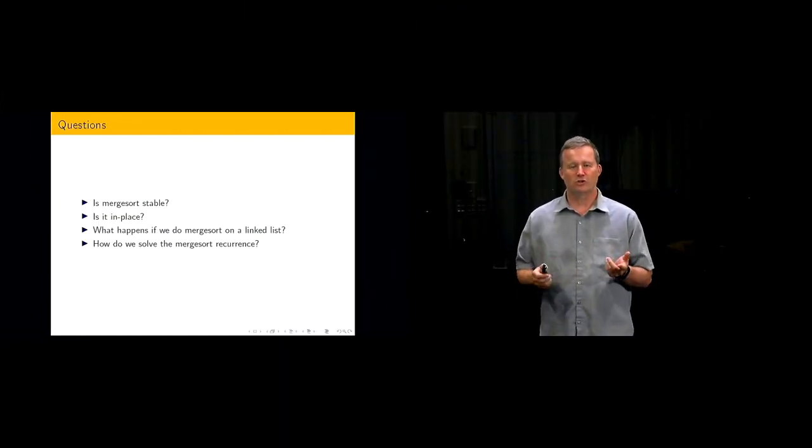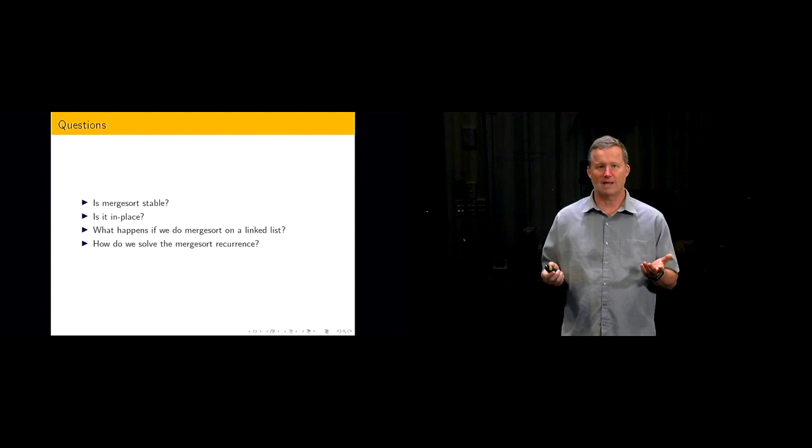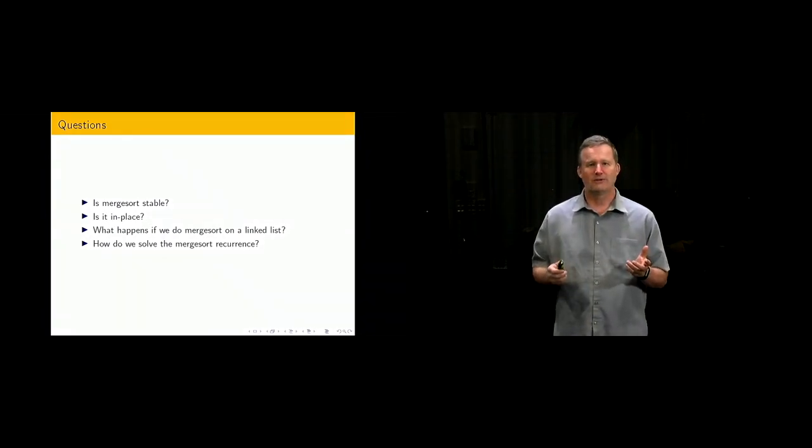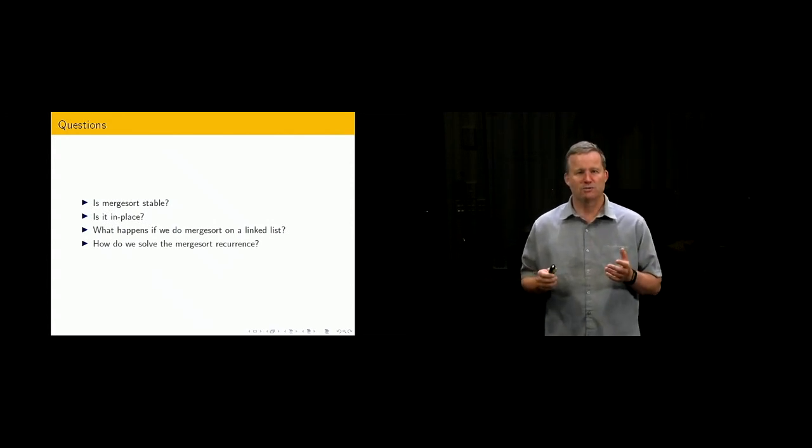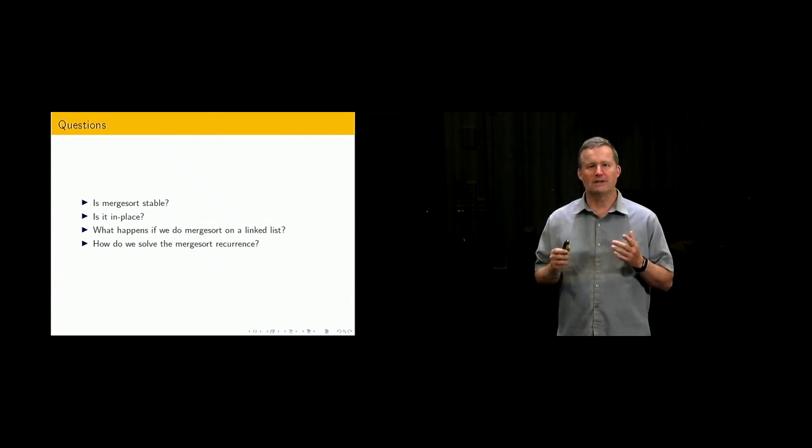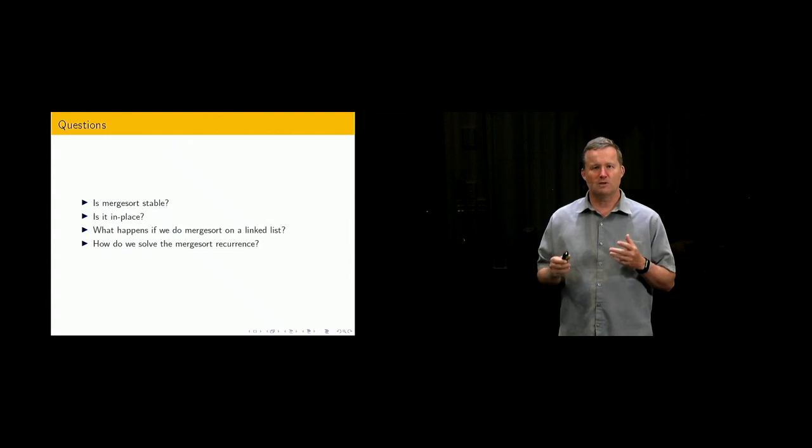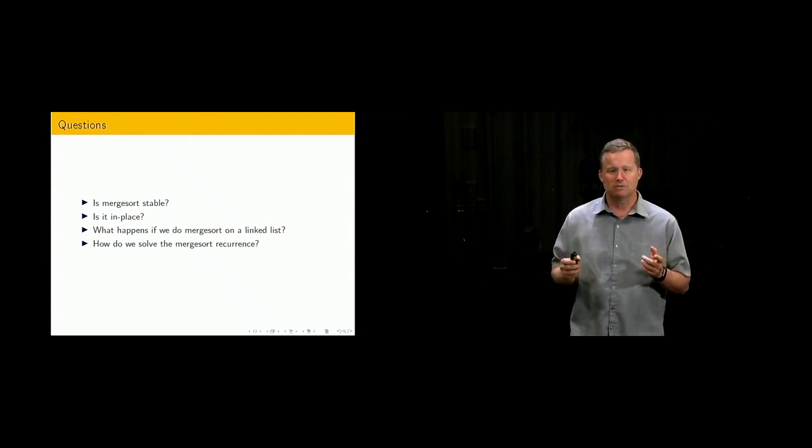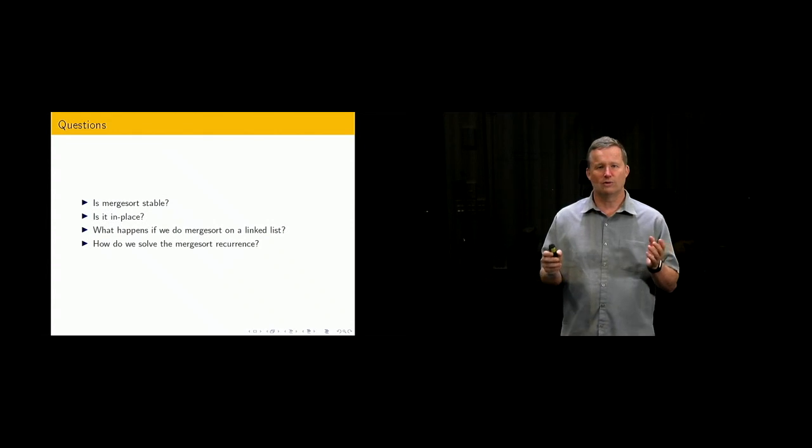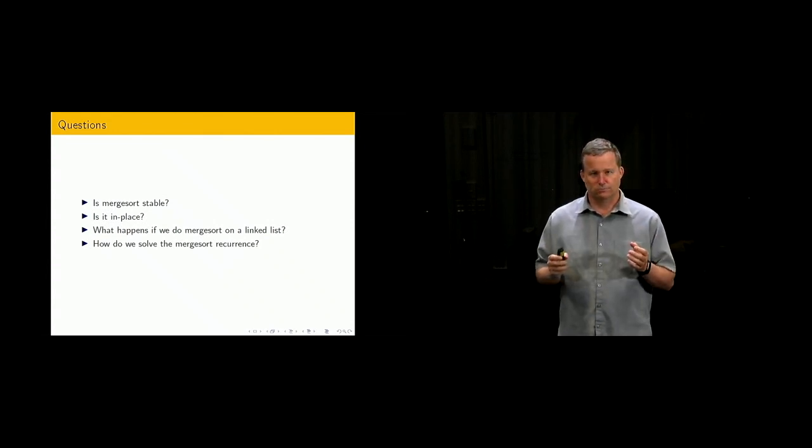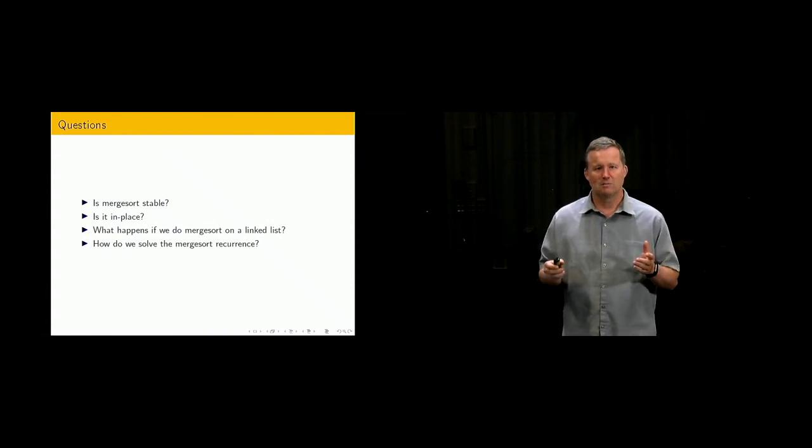First question: is merge sort stable? And the next one: is it in place? These should be easy to answer once you've gone through the algorithm. As usual we want to have a look at the difference between arrays and linked lists. It turns out that merge sort can be implemented really quite nicely on linked lists, much better than on arrays in some sense. There's a bit of work to understand why but you think about that. Think about what happens when you do the recursive calls, get to the bottom, and then want to come back up. It's a little bit of a vague hint, but something to think about there.